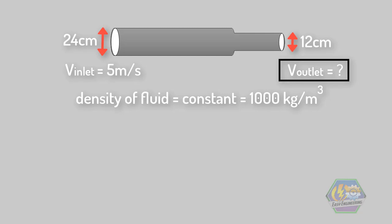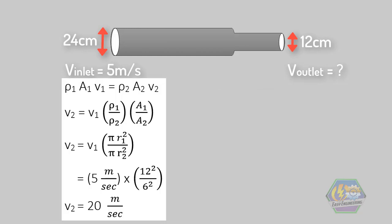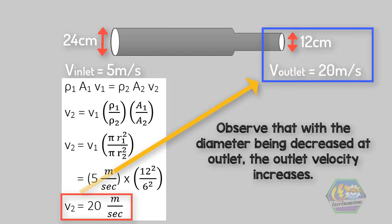Since we already know the continuity equation, we can solve this right away. Using the equation: mass flow rate of inlet equals mass flow rate of outlet. Since this is a circular pipe, we use the area formula pi multiplied by the square of the radius. This gives us an output velocity of 20 meters per second.